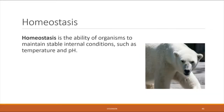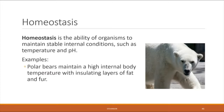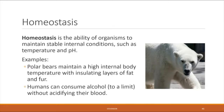Property six: homeostasis — the ability of organisms to maintain stable internal conditions, including temperature and pH. Polar bears are able to maintain a high internal body temperature despite a very cold environment because they have insulating layers of fat and fur that prevent heat from escaping. In humans, we have a special buffering system in our blood that prevents the acid-base balance from being thrown off too much, even when we consume highly acidic substances like alcohol.